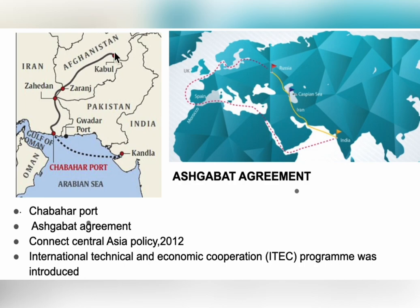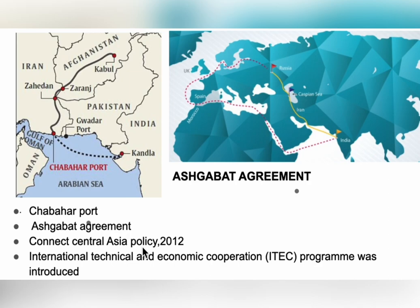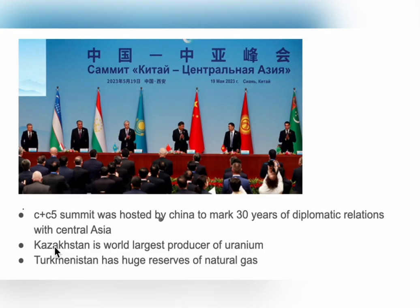The Ashgabat Agreement was established for better transportation between Kazakhstan, Uzbekistan, Turkmenistan, Iran, and Pakistan. The Connect Central Asia (CCA) policy of 2012 was introduced to broaden political, economic, security, and cultural connections. India has signed strategic partnership agreements with Kazakhstan, Turkmenistan, Tajikistan, and Uzbekistan, and a civil nuclear agreement specifically with Kazakhstan — because Kazakhstan is the world's largest producer of uranium.